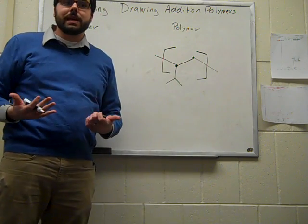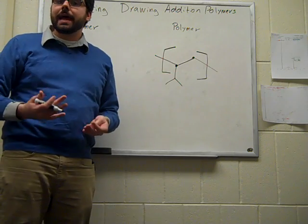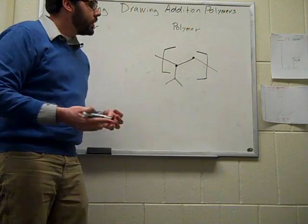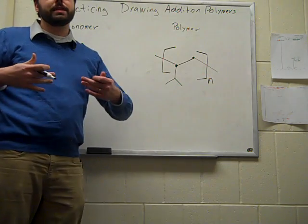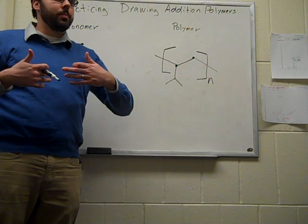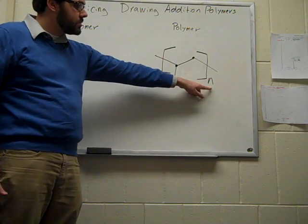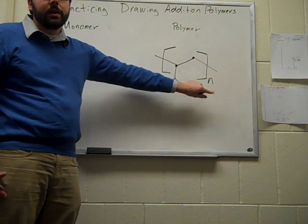Then, to indicate that this repeating unit goes on again and again and again and again, what we do is we use a subscript here, N, where N indicates that this is a repeating unit, and in most cases for polymers, N is very big.